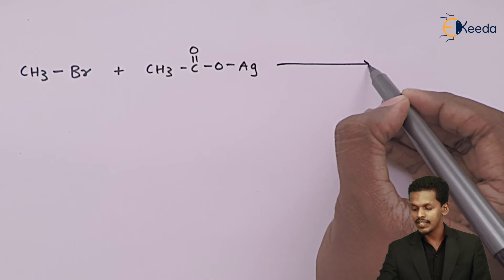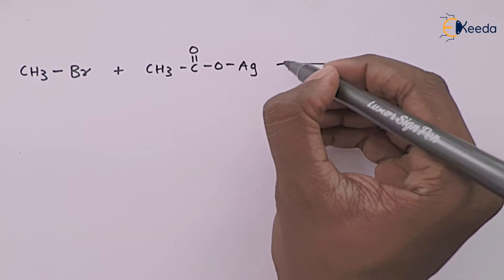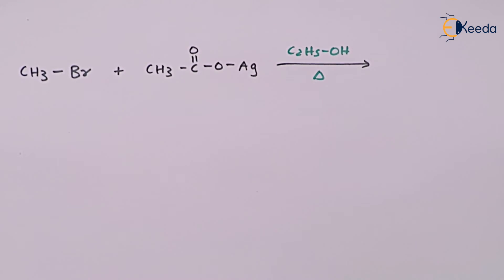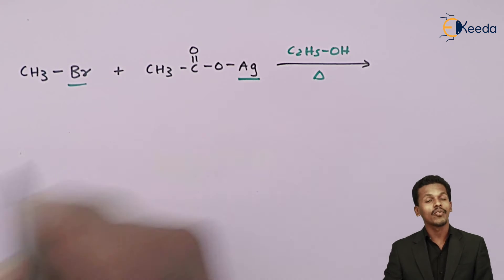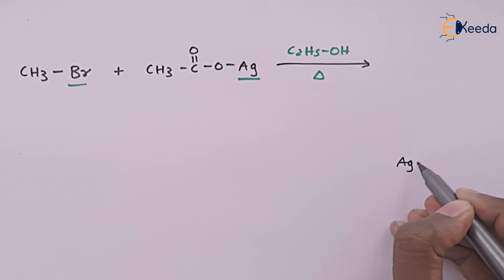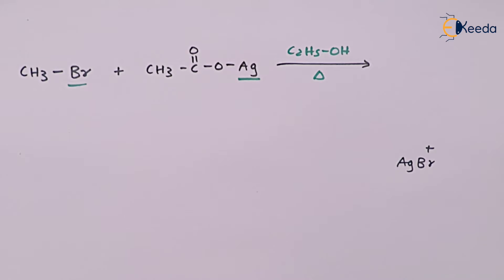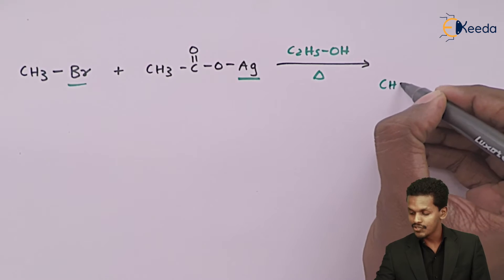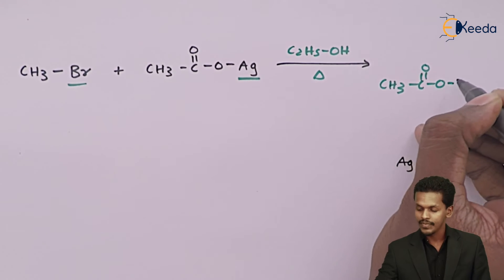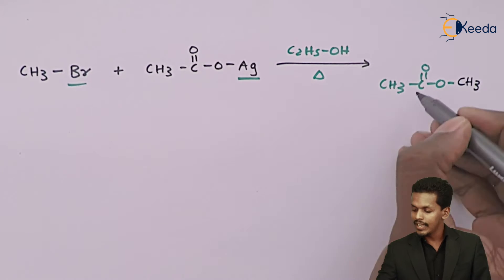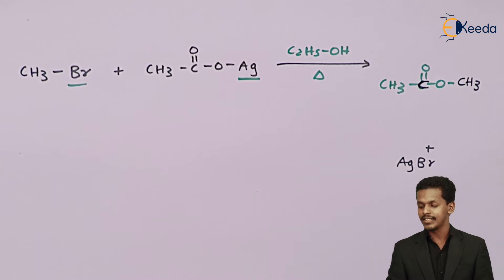This reaction happens in ethanol solution (C₂H₅OH) with heating. The bromine atom along with the silver atom undergo a substitution reaction such that AgBr is produced as a byproduct. The main product obtained is CH₃C(=O)OCH₃, which is the ester group combined with the alkyl group — and we call it methyl acetate as the common name.